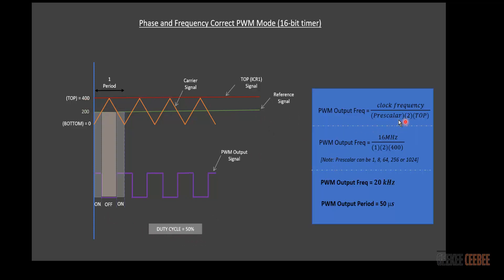To find the output frequency, it's a similar equation, but now we set our own top value. If you set the top to 400 with a prescaler of 1, you get a 20 kHz output frequency, which is what we want in this example.